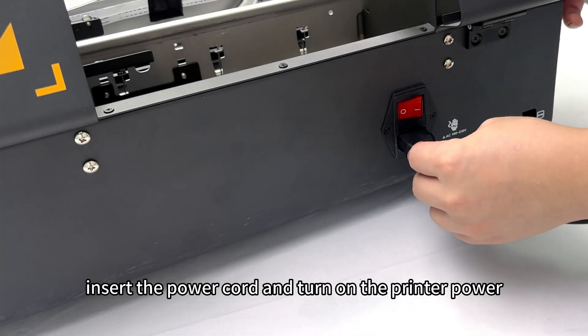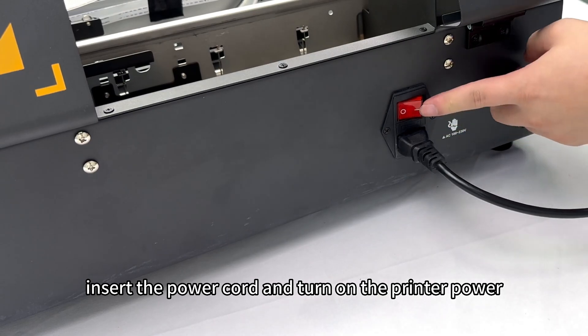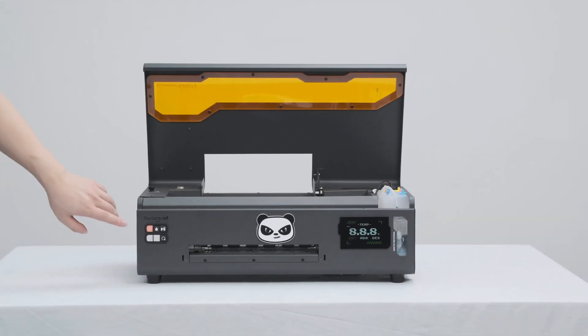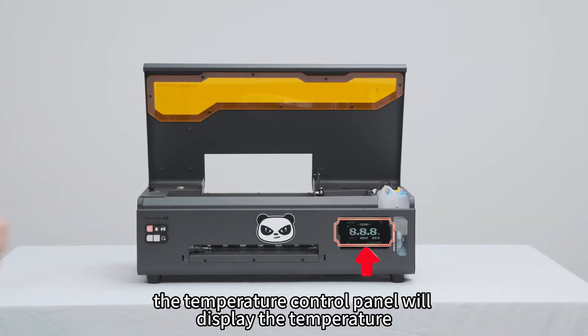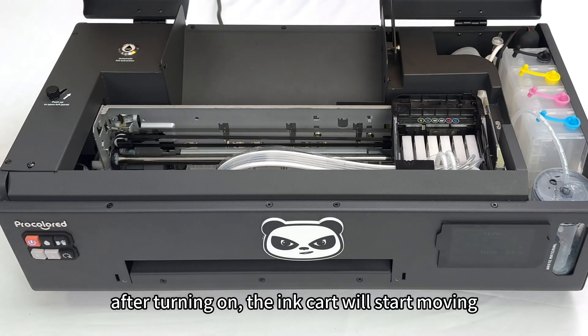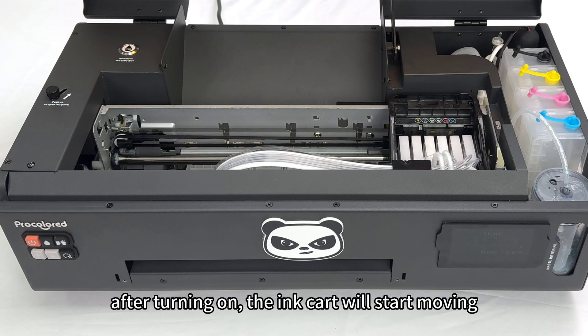Insert the power cord and turn on the printer power. The temperature control panel will display the temperature. After turning on, the ink cart will start moving.